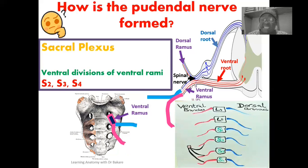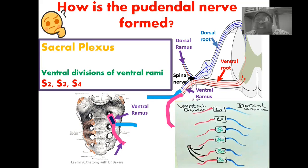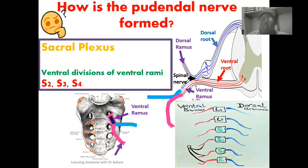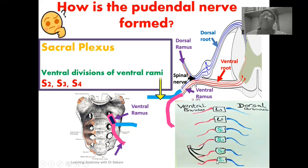Specifically in the formation of the pudendal nerve, we target just the ventral division, highlighted here in purple. We have the ventral divisions from the ventral rami of the sacral spinal nerves S2, S3, and S4. Everything about the formation of the pudendal nerve is about ventral — it is the ventral division of the ventral rami, highlighted here in yellow, that gives rise to the pudendal nerve.